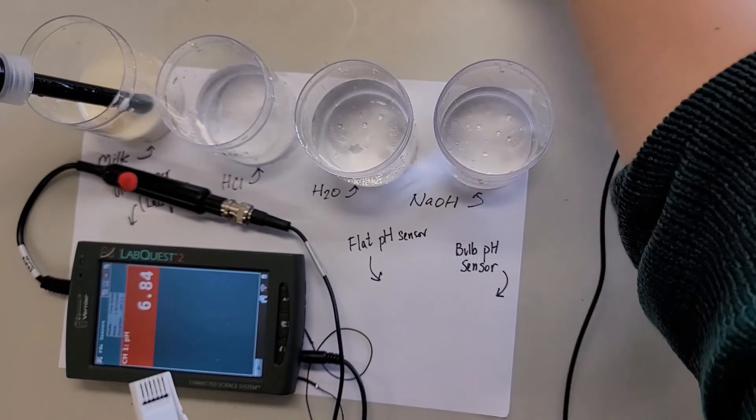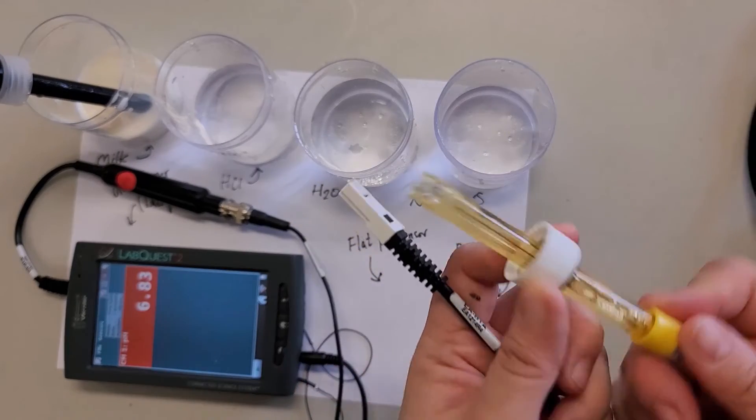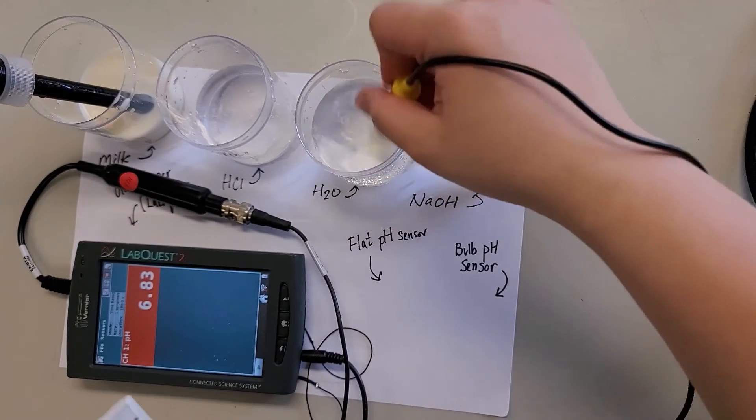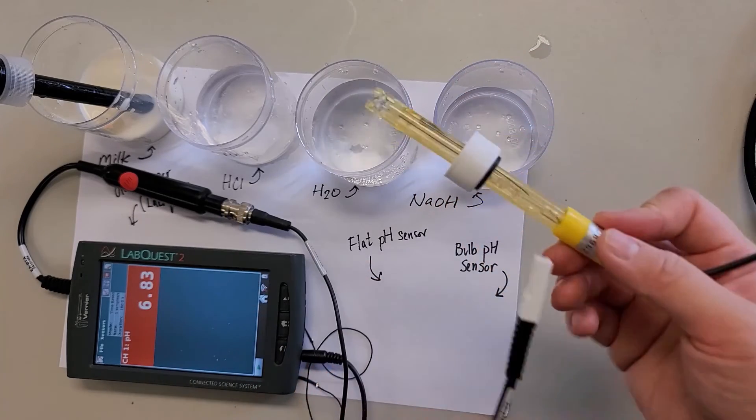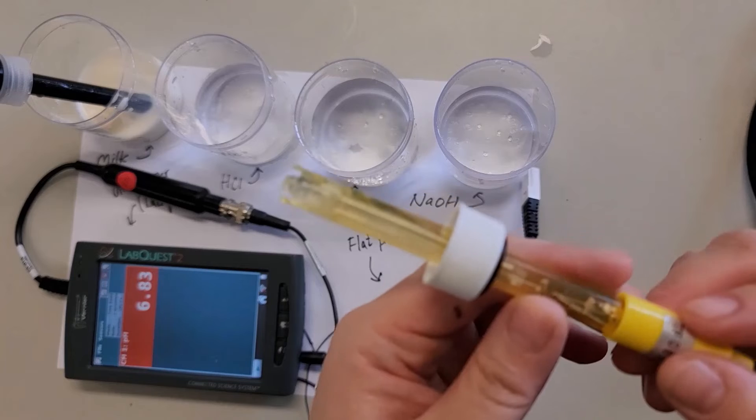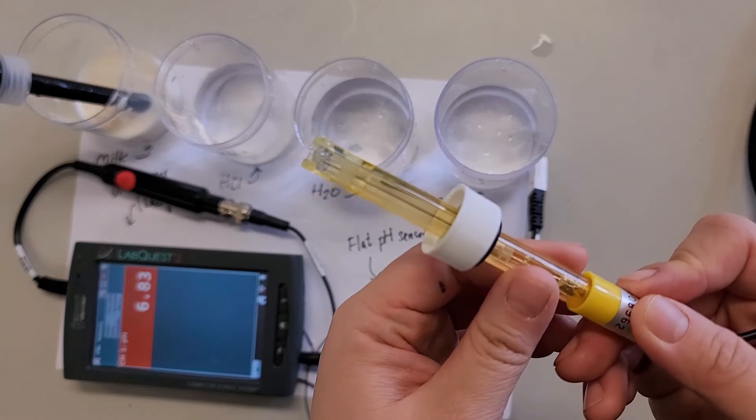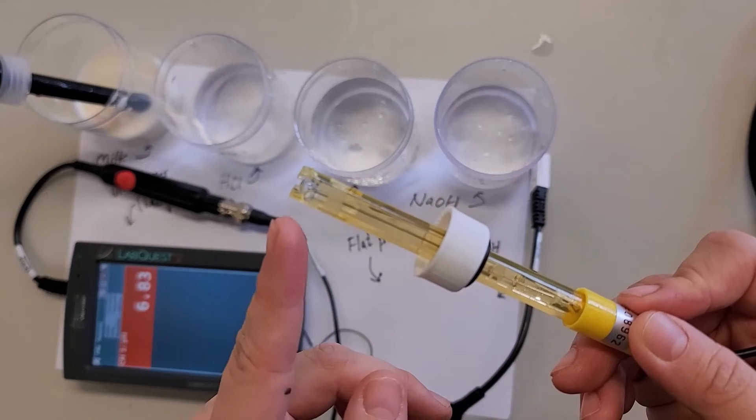Put it safe, put the buffer safe. Again, what we usually do is we rinse it with water first. Rinse it with water before and after use. Now, why do we call this a bulb pH sensor? You can see it close up. This is actually a bulb at the top. It's kind of like a light bulb here.